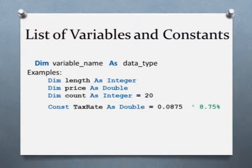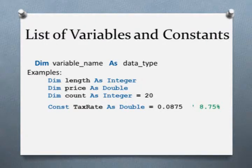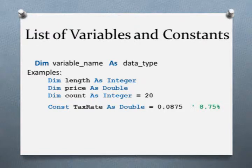We can also initialize a variable at the same time we declare it. For example: dim count as integer = 20. Constants are declared with the keyword const in place of dim. The value of a constant cannot be changed after it's been defined. For example: const TaxRate as double = 0.0875. I have a comment there as 8.75%, which helps the next person realize I'm using it as a percentage instead of some other value.